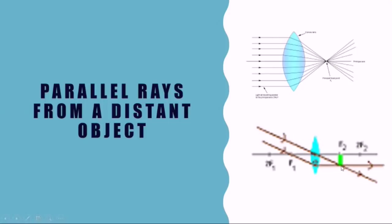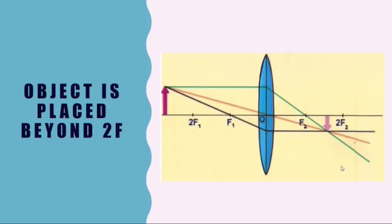This is the case of the object lens of a telescope. We use this principle in the object lens of a telescope. Number two: when the object is placed beyond 2f. Now we use three rays to construct the image.